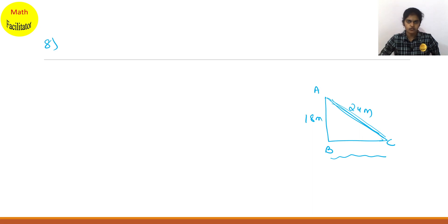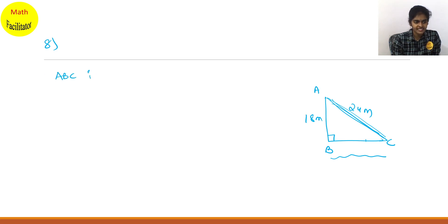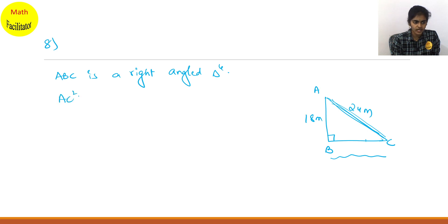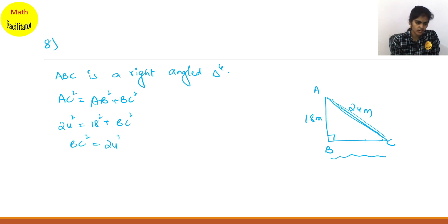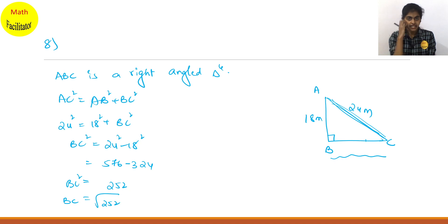Taut means it is a straight line. If you keep the distance less, the wire will be loose; if you keep the distance properly in a straight line, the wire will be straight. Simple Pythagoras theorem here also. ABC is a right angle triangle. AC square equals AB square plus BC square. AC is 24: 24 square equals 18 square plus BC square. So BC square equals 24 square minus 18 square, which is 576 minus 324 equals 252.